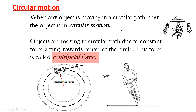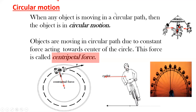Same thing: if a cyclist is taking a bend or a roundabout, there is always a force acting towards the center. Similarly, a merry-go-round — the force is acting towards the center. In all these examples, the direction of the force always acts towards the center. Objects moving in a circular path always experience a force, and that force is towards the center.